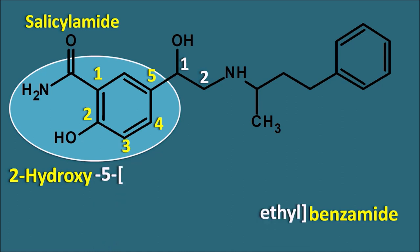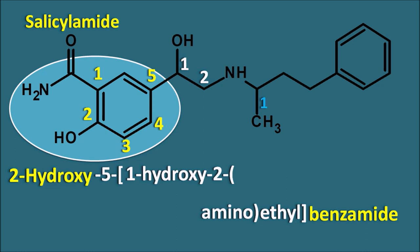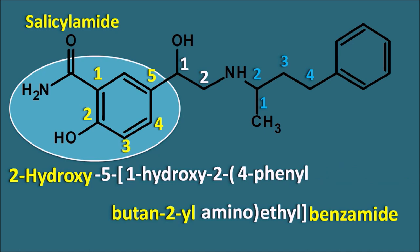At the fifth position of the salicylamide, a side chain is present. Numbering from the point of attachment: position one has a hydroxy group, and position two has an amino group. This amino group is further attached to a side chain numbered as one, two, three, four — considered as a 1-methylpropyl group, or more preferably, butan-2-yl. This butan-2-yl group has a phenyl group at the fourth position, giving a 4-phenylbutan-2-yl group attached to the amino group.